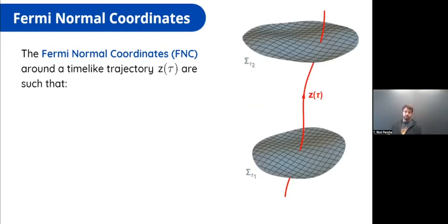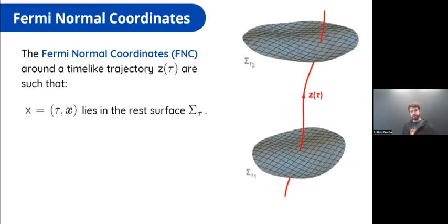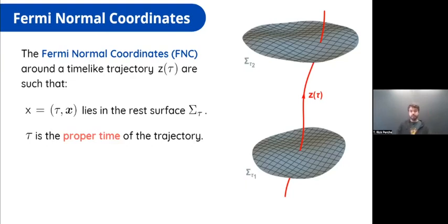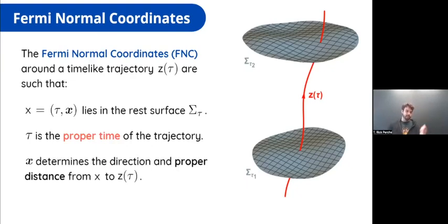The Fermi normal coordinates around the trajectory Z(τ) are essentially a coordinate system such that if an event has coordinates τ and x, this means that this event lies in the rest surface σ_τ, where σ_τ is the rest surface associated with the trajectory labeled by proper time τ. The spatial part of the Fermi normal coordinates determines the direction and the proper distance from this event to the curve within each slice.